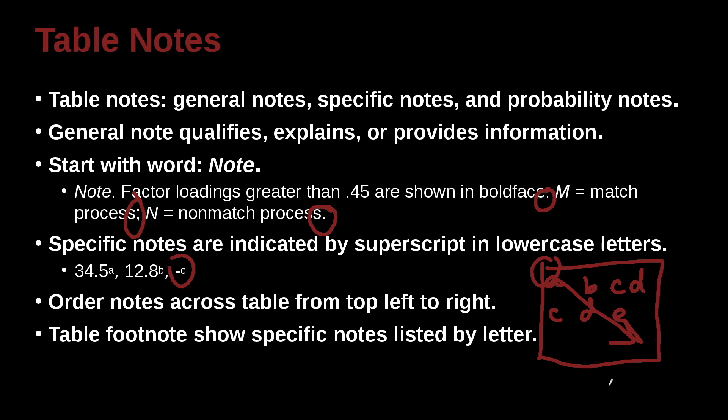Table footnotes can show specific notes listed by a letter. So again, we can have them listed down at the bottom of the table. You can have your note, you can say something, but then you can also say A, and then B, what are these things separately, and that's the table footnote. For example, here we have A is N equals 25 as a note, and then B, the participant did not complete the trials. So those are the little footnotes we can add.